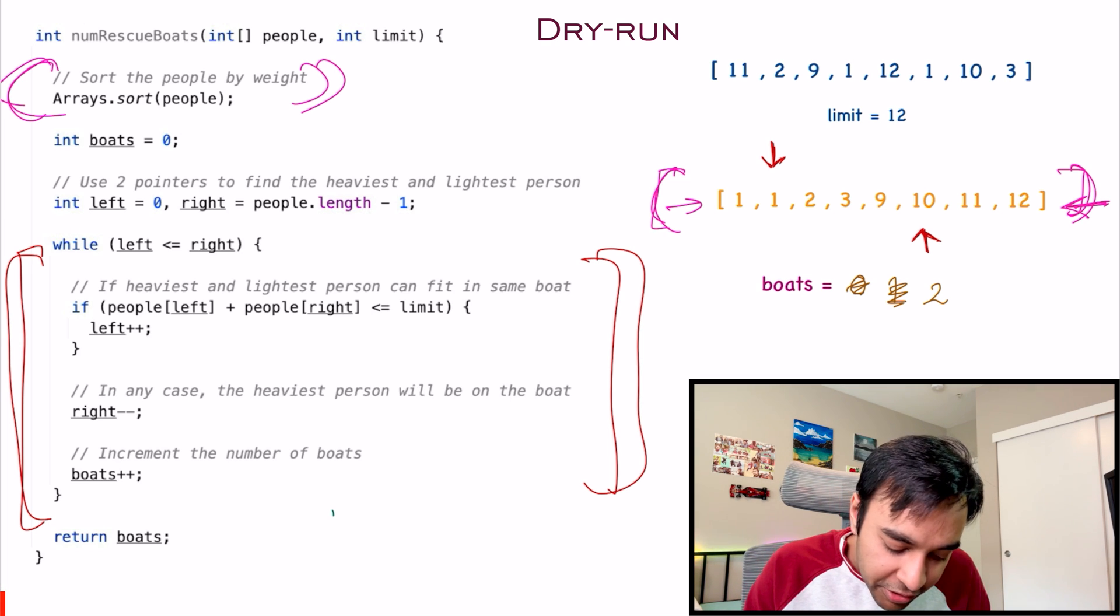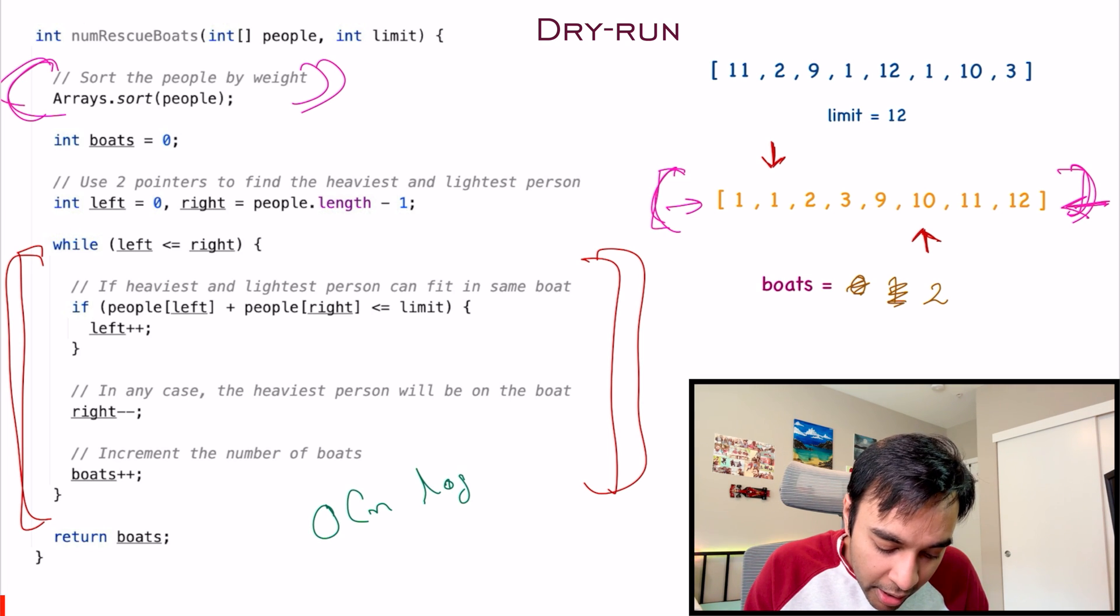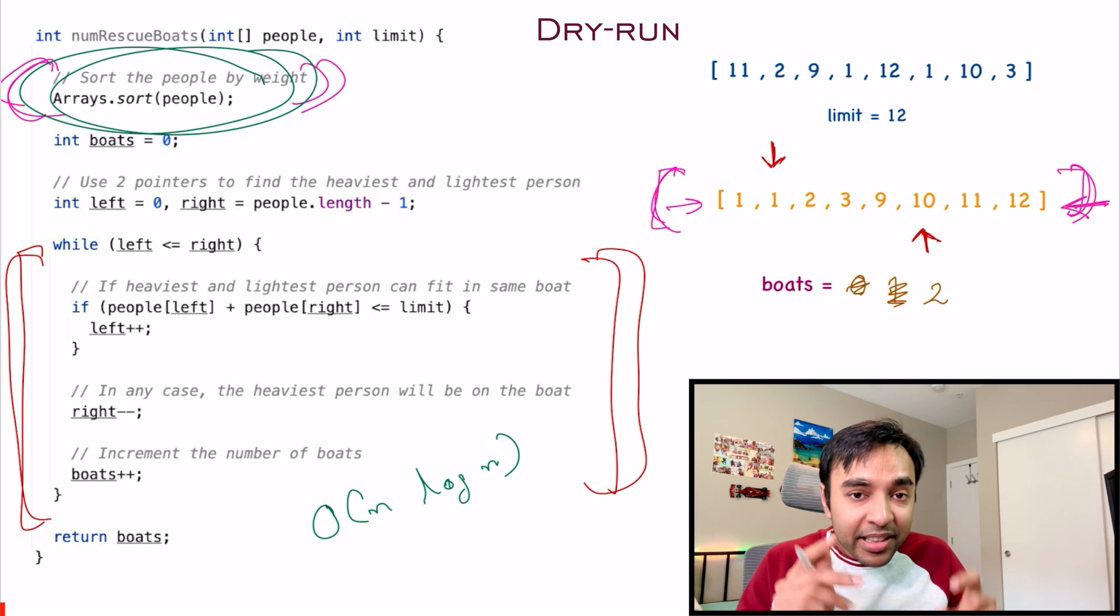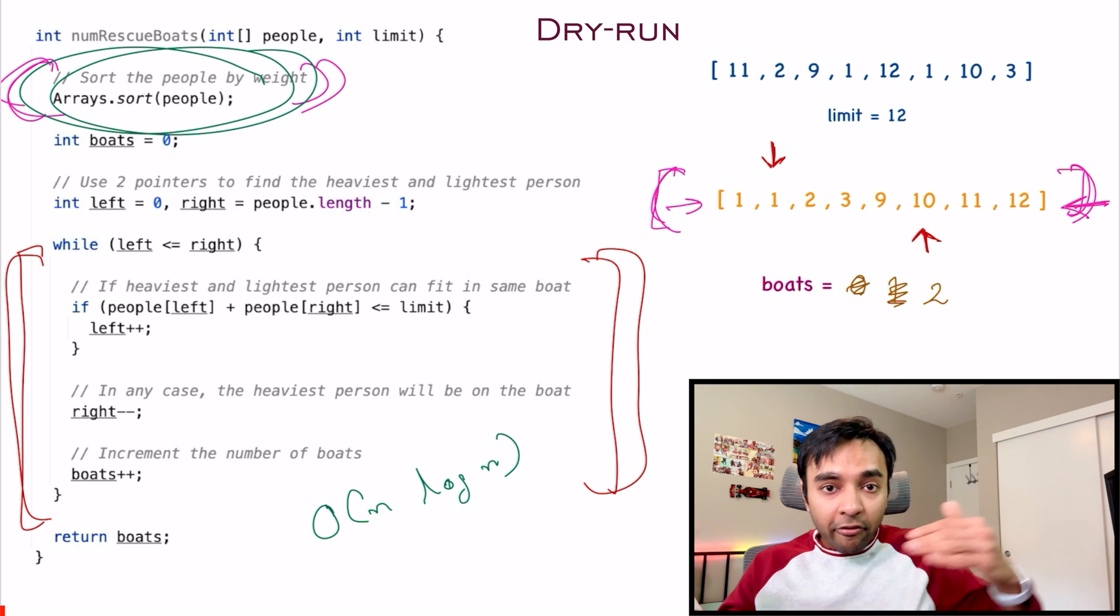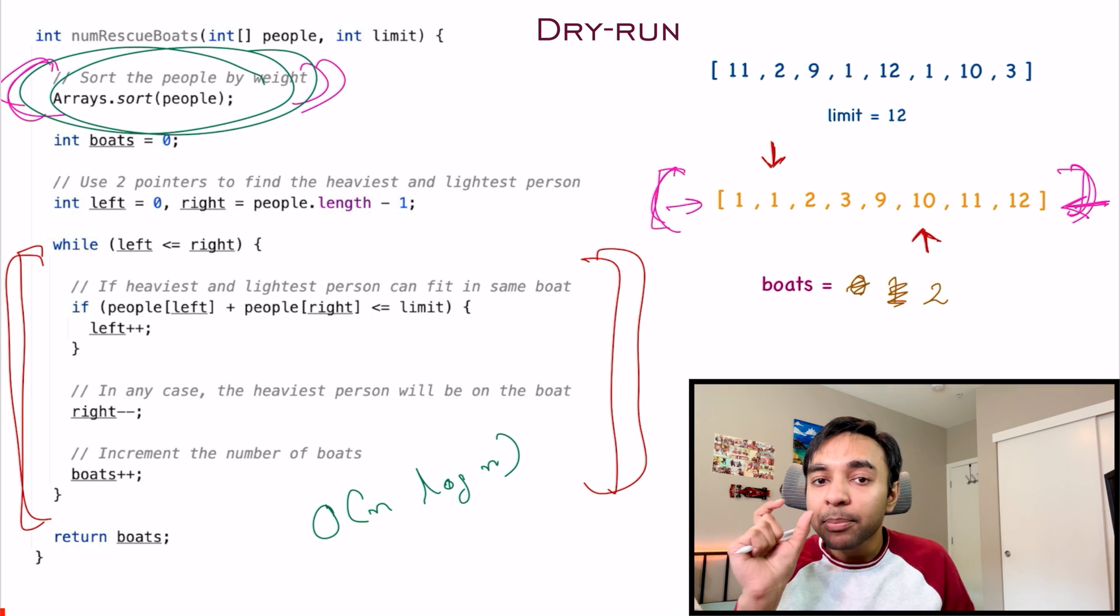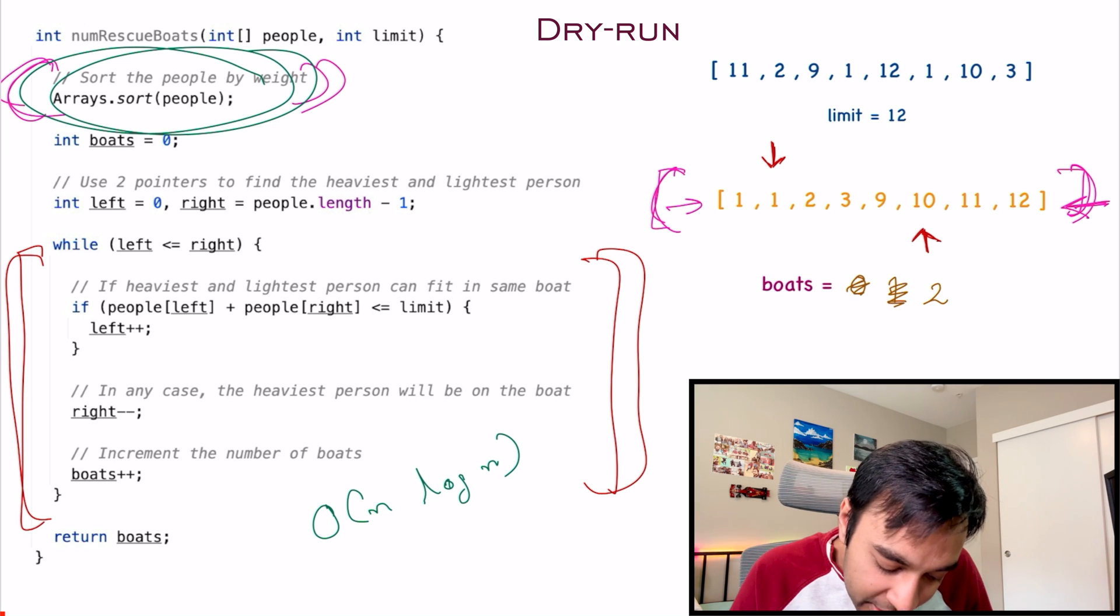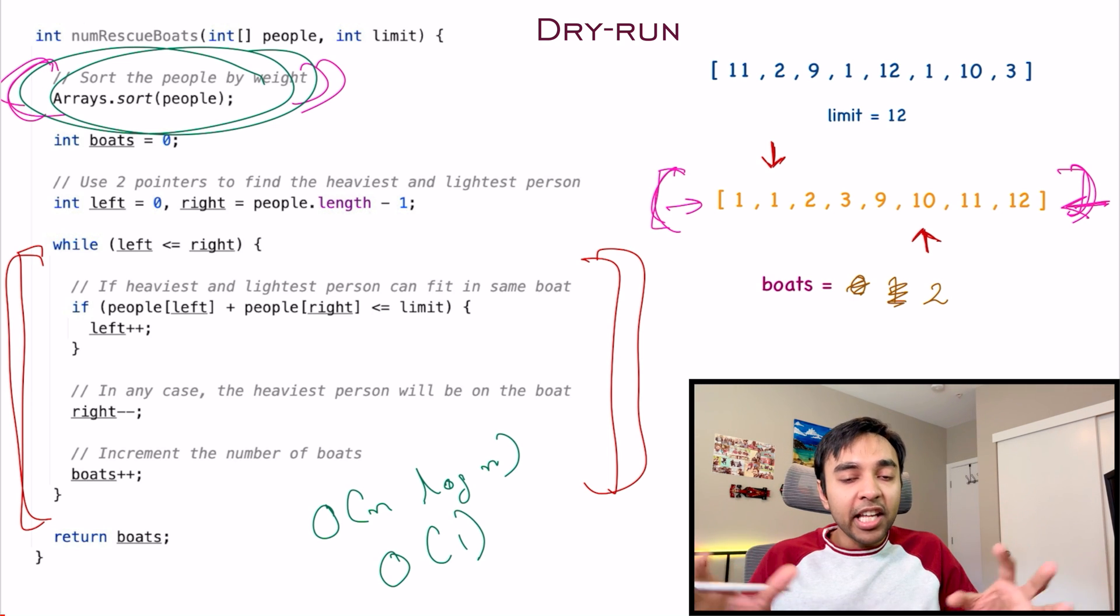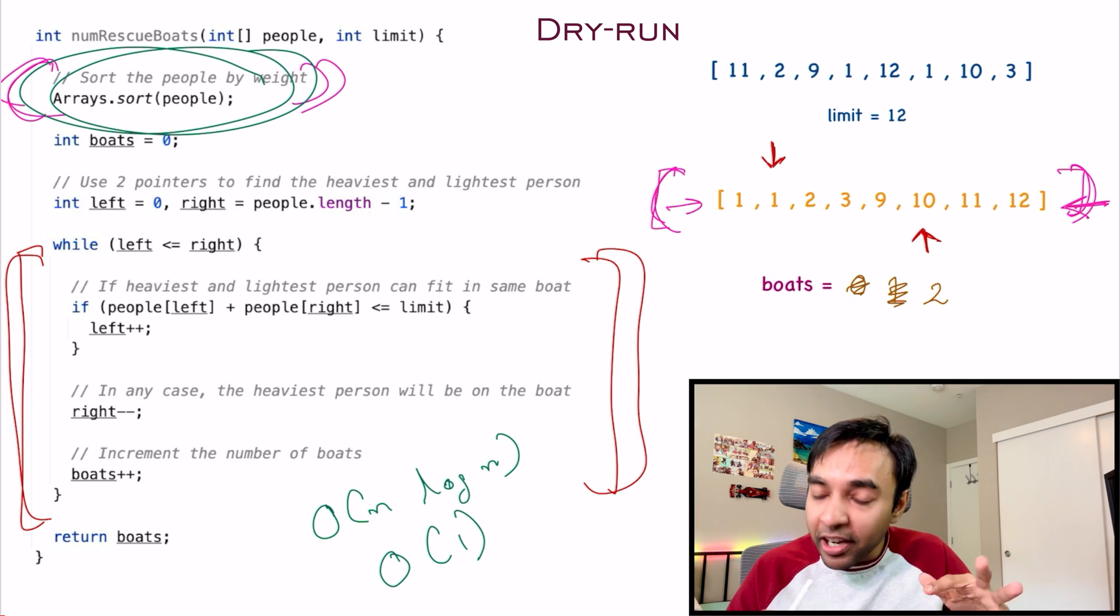The time complexity of this solution is order of n log n, because you need that time to sort your array. That is the only time required. When you are doing the traversal, that happens in order of n time. And the space complexity of this solution is order of 1, because you are not taking up any extra space to arrive at your solution. I hope I was able to simplify the problem and its solution for you.